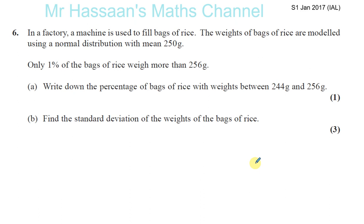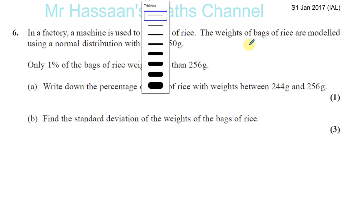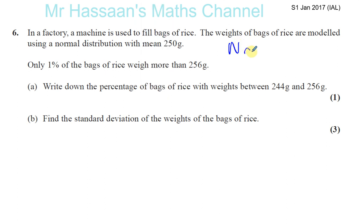Question number six from January 2017 IAL. In a factory, a machine is used to fill bags of rice. The weights of bags of rice are modeled using a normal distribution with a mean of 250 grams and a standard deviation sigma that we don't know.